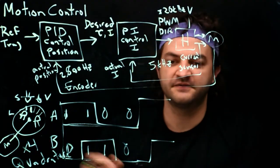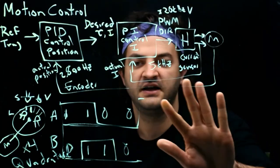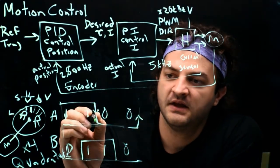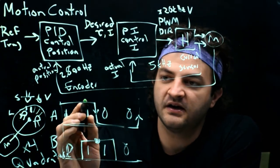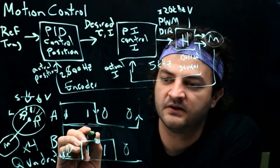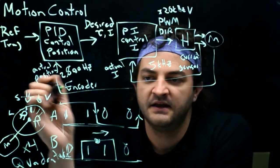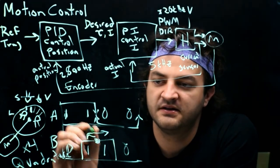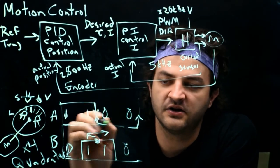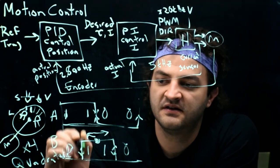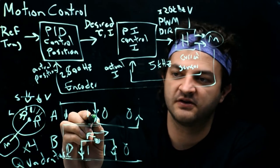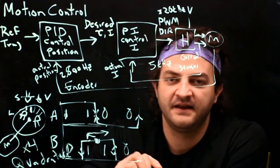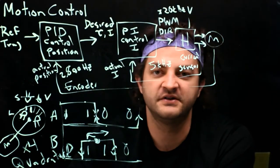On the PIC side we have to do quadrature decoding. This can be a little tricky. Every time A goes from high to low or low to high, we read B and know which direction we're going. If A goes from high to low and B is a 1, we're going one way. If A goes from low to high and B is high, the motor is going the other way. We could do interrupts based on rising and falling edges for each signal — when we get an interrupt, figure out A's state, read B, and increment or decrement our encoder position accordingly.